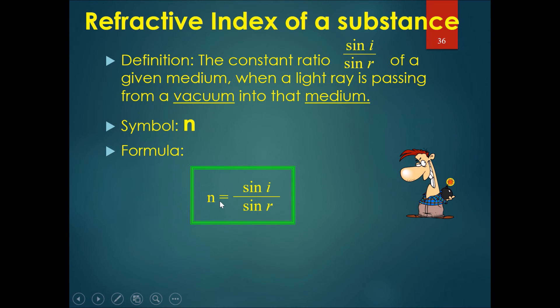The refractive index of a substance equals sine i (angle of incidence) divided by sine r (angle of refraction). Note that n is always more than one and has no unit. Remember that this case of sine i over sine r only occurs when light goes from a vacuum or air into a medium.